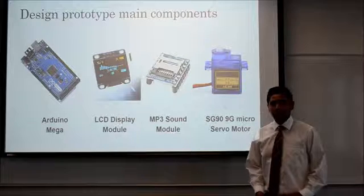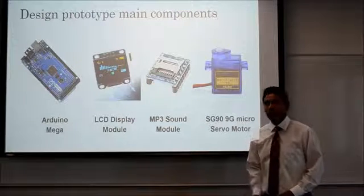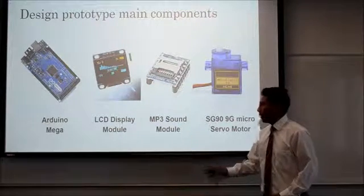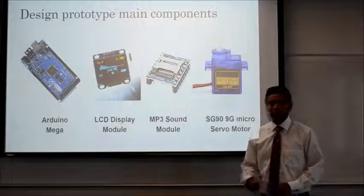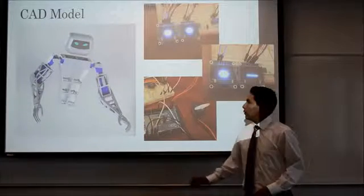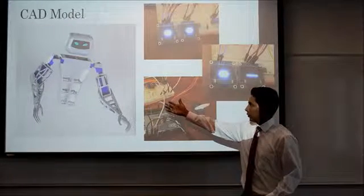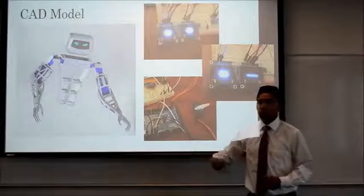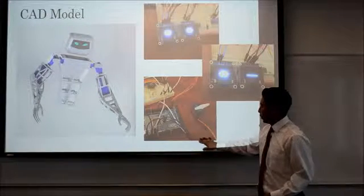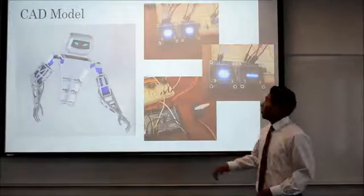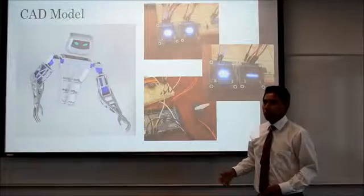We have divided our design process into two stages: first is our prototype, then is our final design. For the prototype we are using the Arduino Mega, two LCD displays, one MP3 module, and some servo motors that will generate the movements of the joints. This is our CAD model as of today. Here we can see how the servos were set up to simulate anatomically correct joint movements. At the bottom we have the wiring layout for the servo motors that will serve as the joints, and on top we have some movements we were able to generate through the coding process.